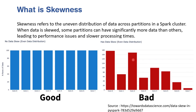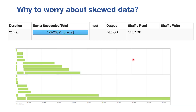Let's see why we should worry about skewed data. As a data engineer, there are two images that are among the scariest when you build a data pipeline. In the first, you can see there are 200 tasks, 199 are almost done, and there is one task still running — maybe for 21 minutes. In the Spark UI you'll see some tasks completing very quickly while others take a long time. Whenever you see something like this in the Spark UI, it's a hint that there is skewness.